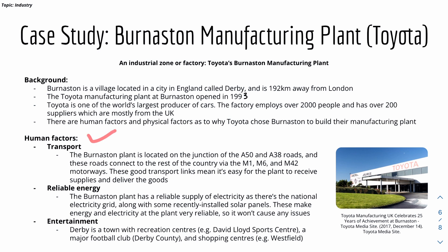Starting with human factors: firstly, good transport links. The Burnaston plant is located at the junction of two roads connecting to the rest of the country via the M1, M6, and M42 motorways, making it easy to deliver goods and receive components. There is also a reliable energy supply, which means no issues for plant operations. Additionally, Derby offers entertainment facilities such as a sports centre, a major football club, and shopping centres for workers at the plant.